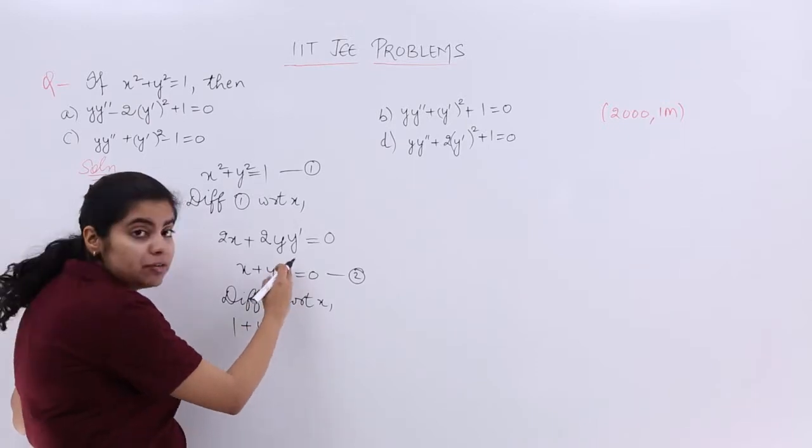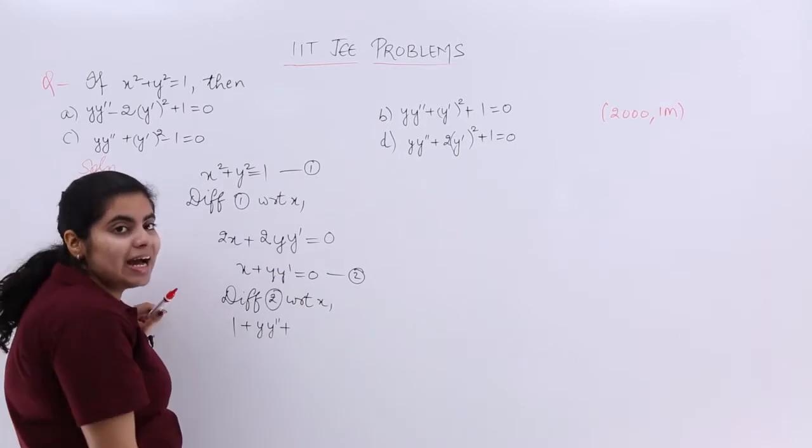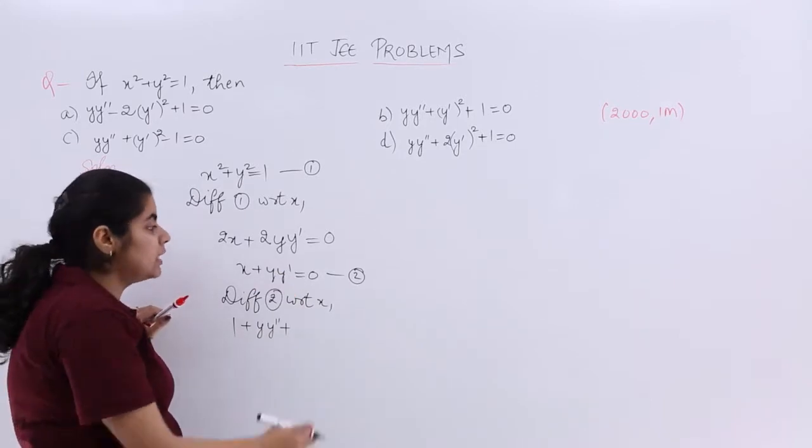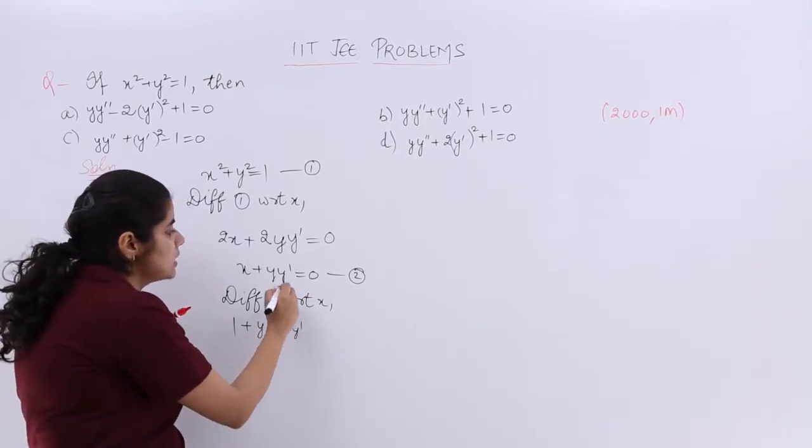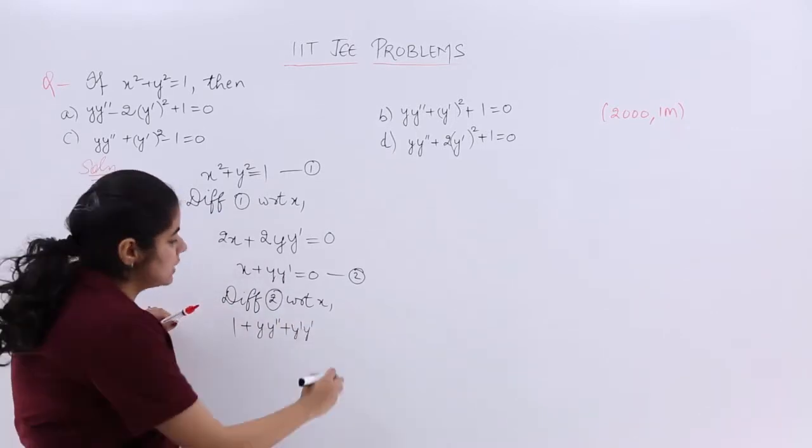So leave y as it is, differentiate y', it becomes y'' plus leave y' as it is. I again repeat, leave y' as it is and differentiate y, it becomes y' so that is equal to 0.